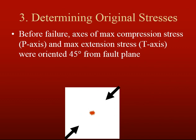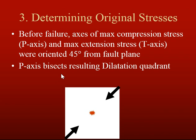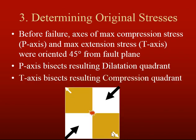The next thing we want to do is determine the original stresses. Before failure, the axis of maximum compression stress — the p-axis — and the axis of maximum extension stress — the t-axis — are oriented 45 degrees from the fault plane. The p-axis bisects the resulting dilational quadrant, whereas the t-axis bisects the resulting compressional quadrant. So we've taken motions observed after the earthquake and used them to figure out what stresses led to that earthquake — a really helpful strategy in seismology.